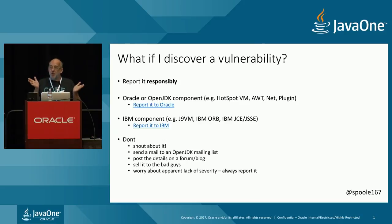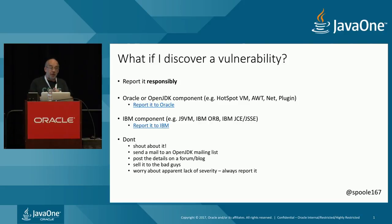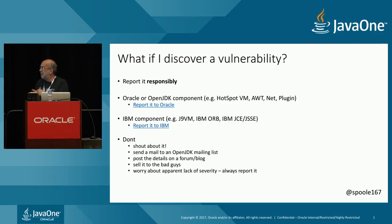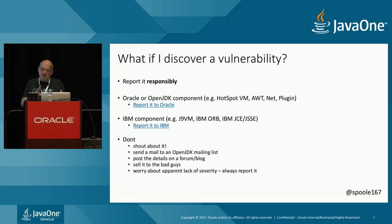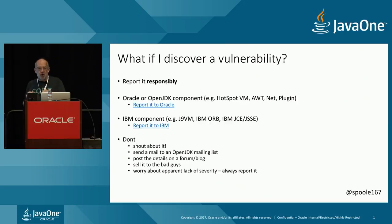There is a responsible way to report vulnerabilities. If you think you've found one, please report it. Don't blog about it or post the details publicly. Don't worry about whether it seems important enough — if you think there's a vulnerability where people can execute remote code or access things outside their privileges, just report it.